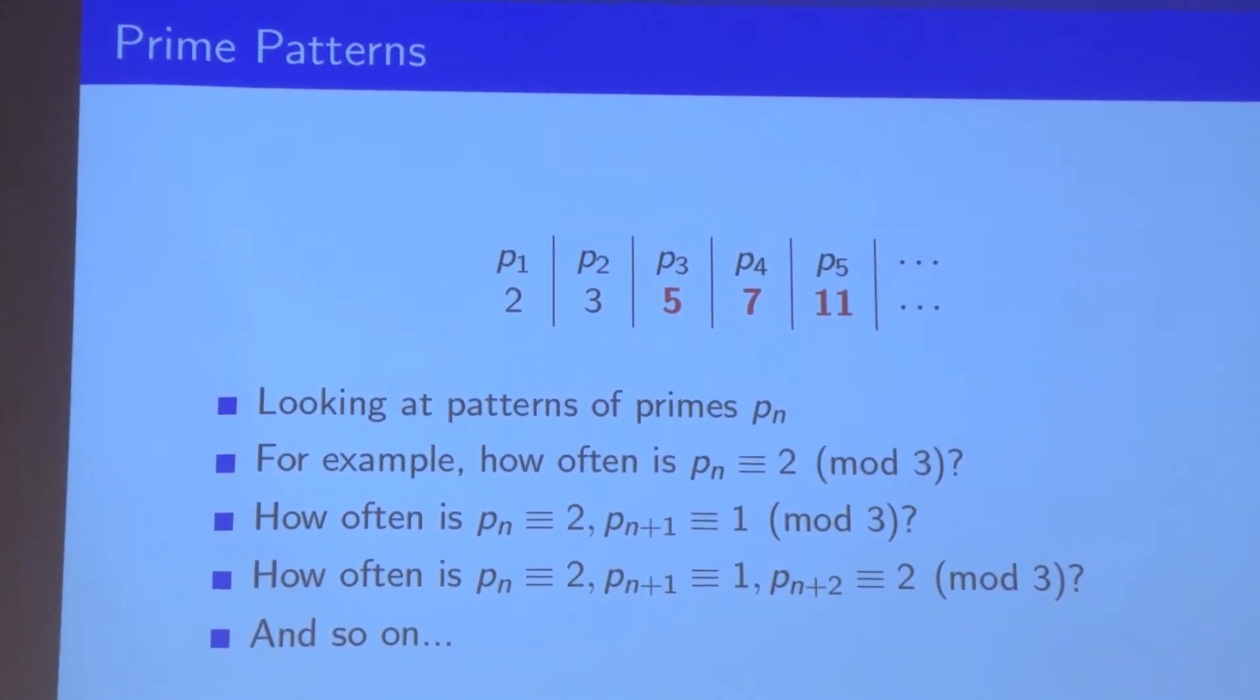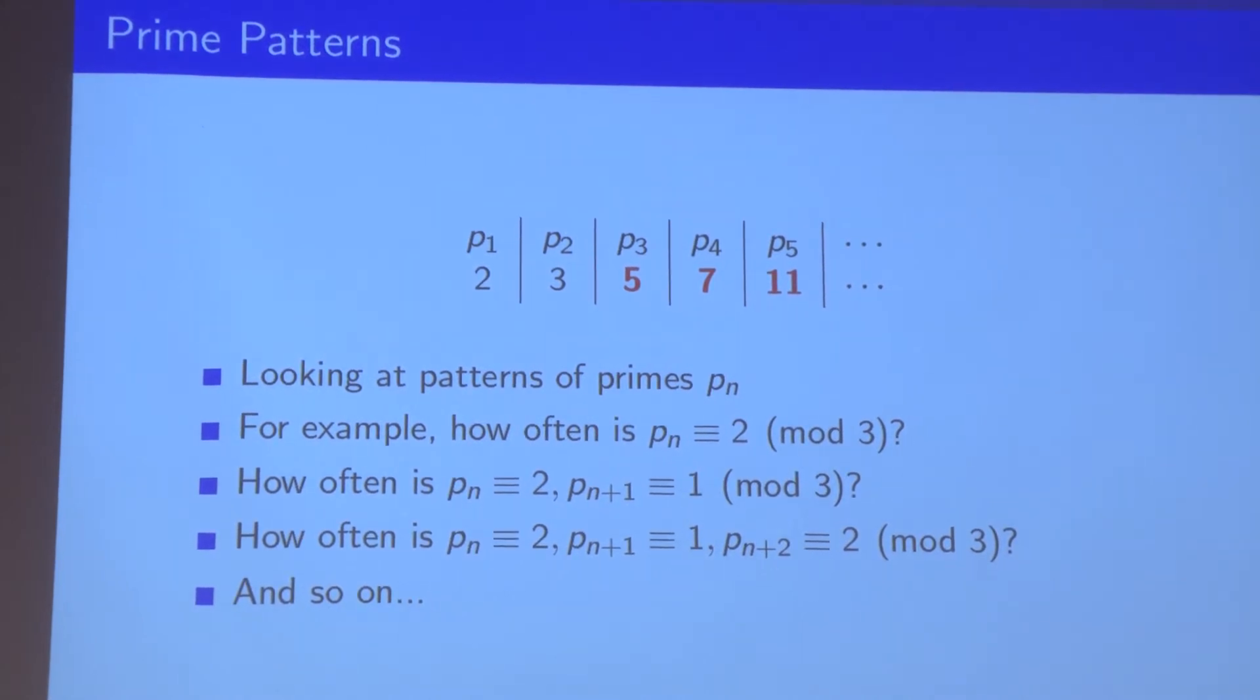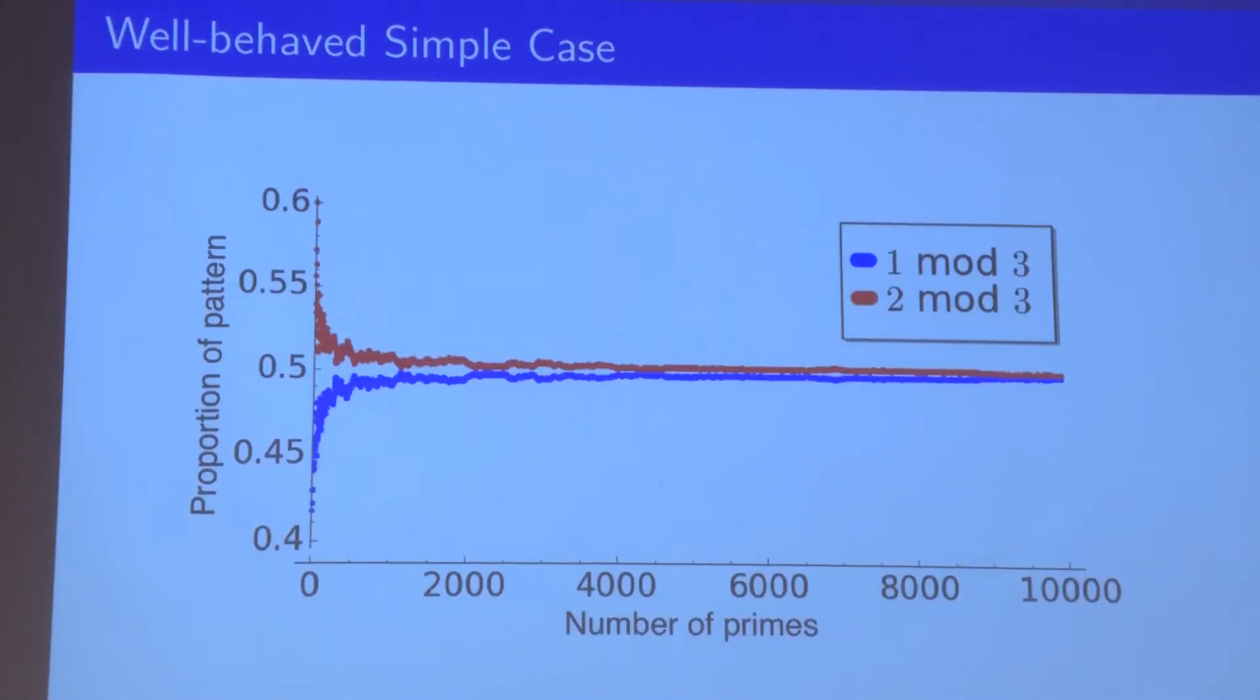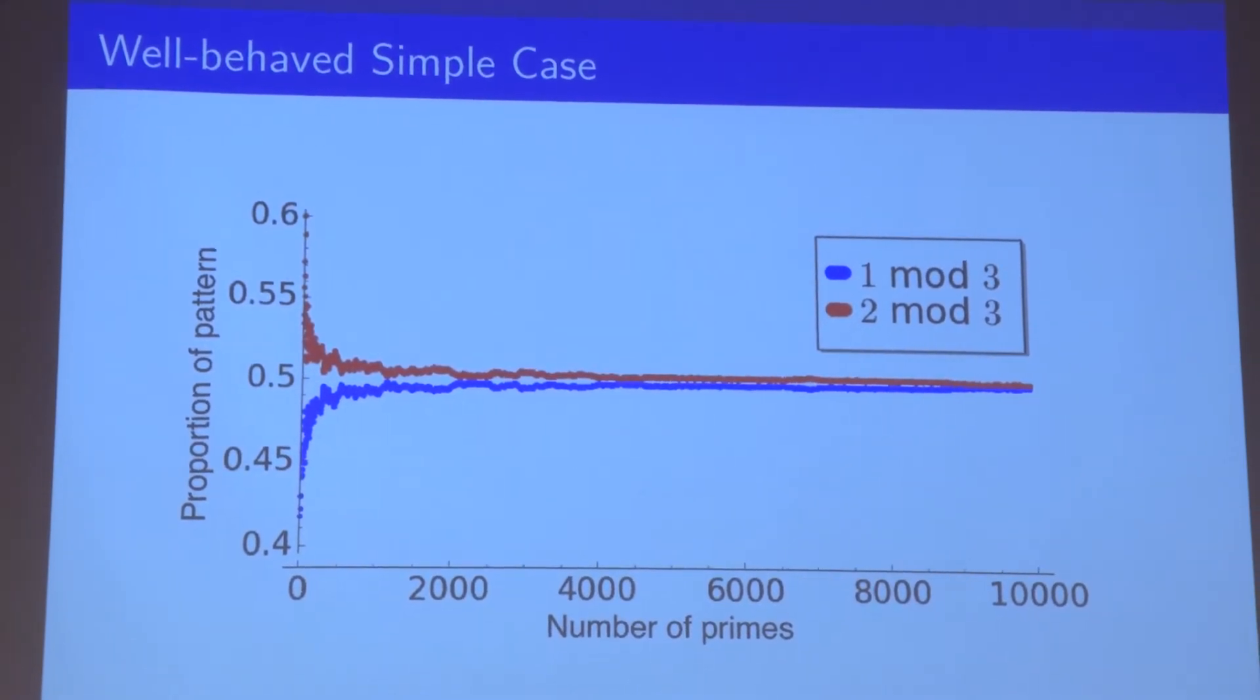I'm about to show you a graph that helps you visualize what I mean by this proportion of primes that satisfy these patterns. So here it is in the simple case. The x-axis in this graph is the number of primes we're considering. For example, let's consider the first 2,000 primes. What proportion of those primes leave a remainder of one when divided by three, and what proportion leave a remainder of two?